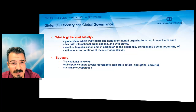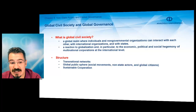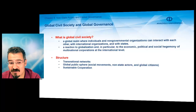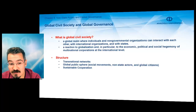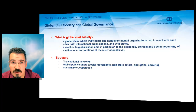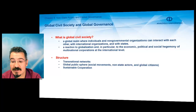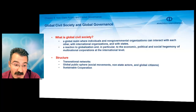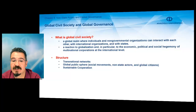In terms of the structure of global civil society, it includes different transnational networks — networks fighting against environmental and political problems, and networks in terms of human rights advocacy. Global civil society includes transnational advocacy networks and transnational operational networks. It is also defined as a global public sphere where social movements, non-state actors, and global citizens operate. One of its major aims is to promote sustainable cooperation between different nations at the global level.